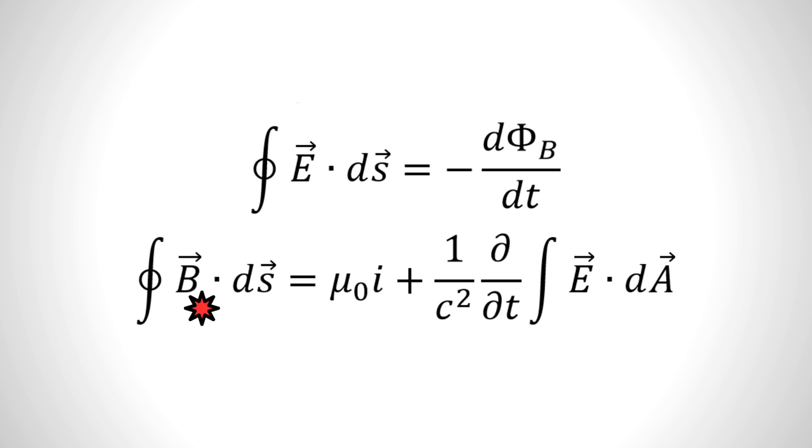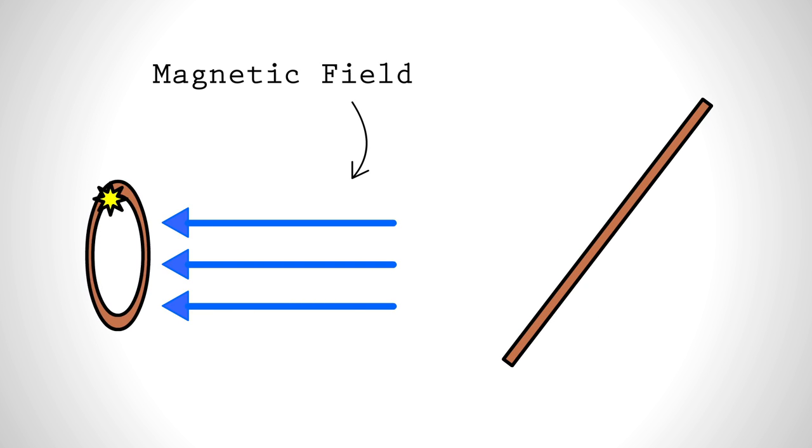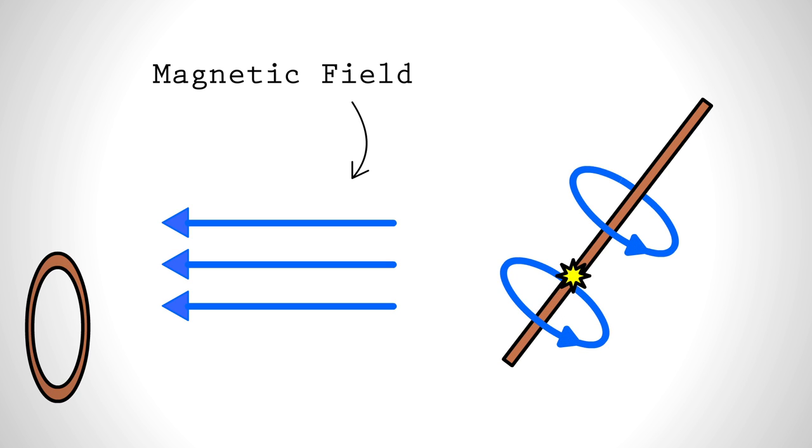What does that mean in plain English? Move a coil of wire over a magnet and you'll generate electricity, or run a current through a wire and you'll create a temporary magnet.